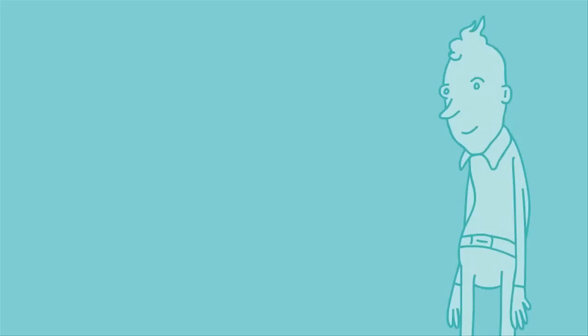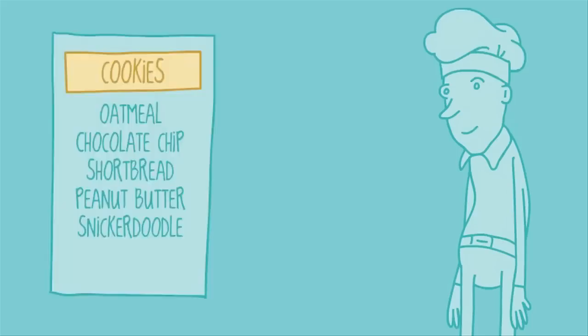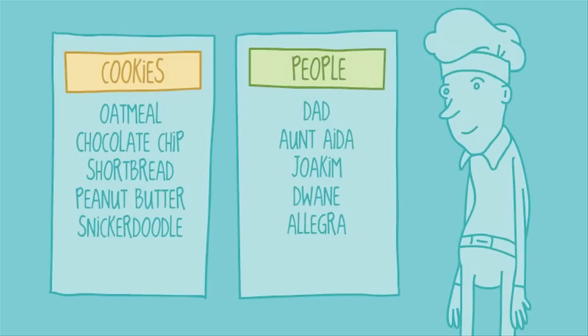Say you're a hard-working amateur baker. You might decide to keep a database of all the cookies you know how to make, and the people you make them for — your friends and family. A simple database, because it only contains two lists.